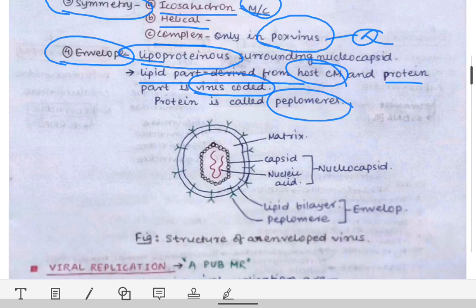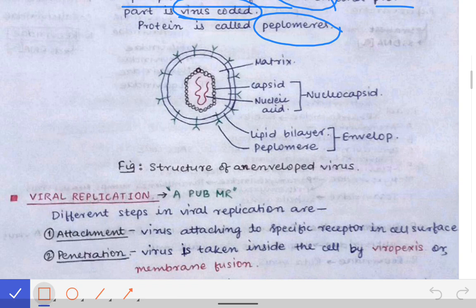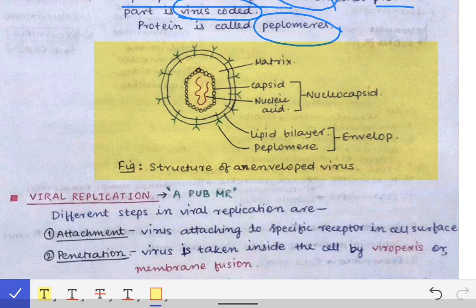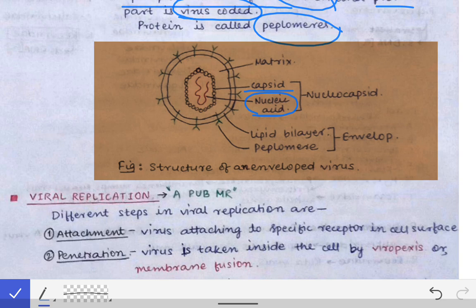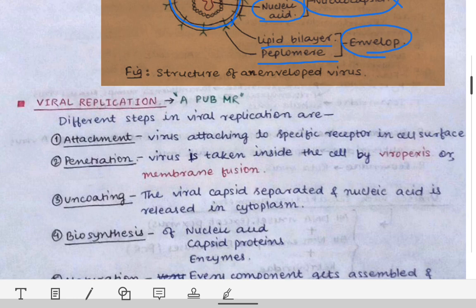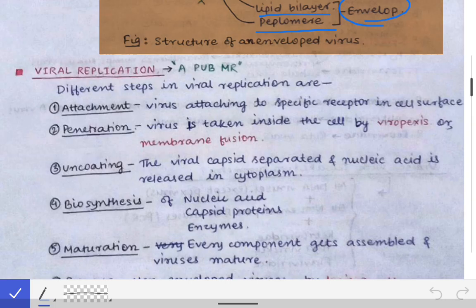Now we see the general structure of a virus. In the diagram we can see the capsid and nucleic acid together called the nucleocapsid, and the envelope surrounding the nucleocapsid. The envelope is made up of the lipid bilayer and the peplomers. That covers the morphology of viruses in a nutshell.